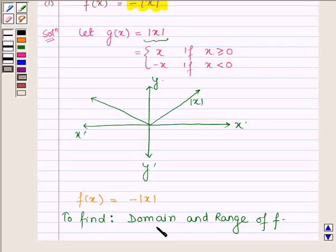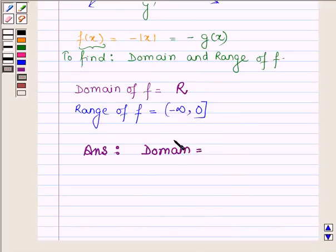Now as we can see here, f(x) which is minus of mod x can be written as minus of function g(x). The domain is the set of all those values which x can take and that is set of real numbers, and range is the set of values which the function can take and that is from minus infinity to closed interval 0.